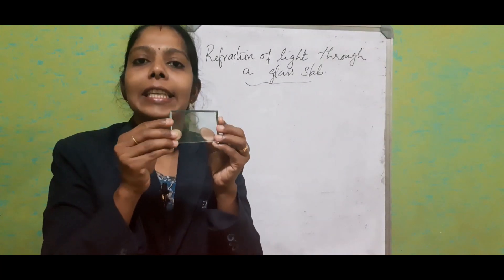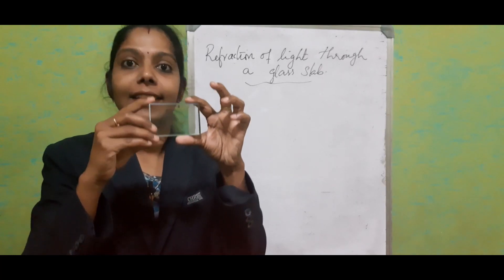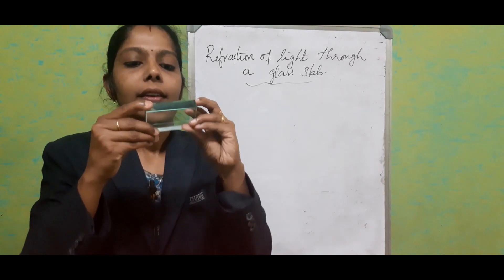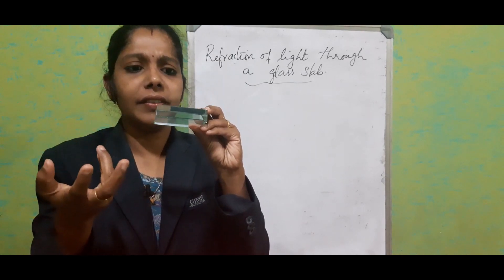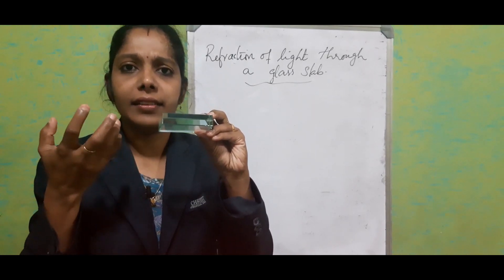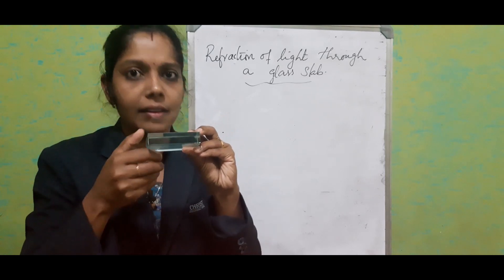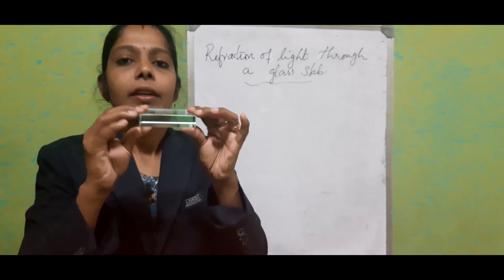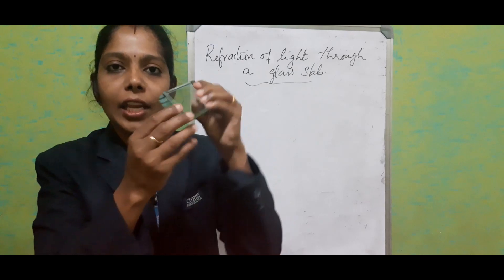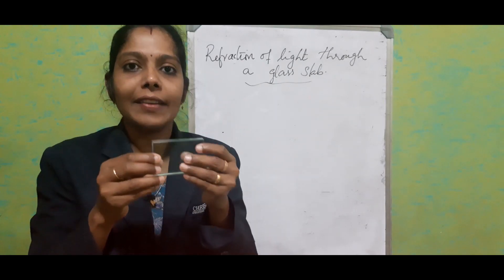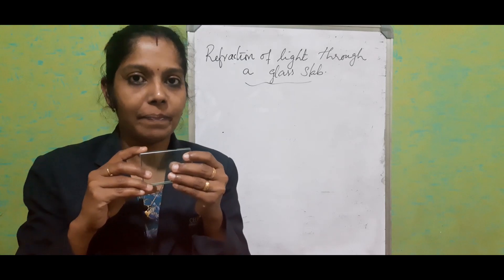Let's start with glass slab. This is a glass slab — it is rectangular in shape. It has a particular thickness, and we can get different thickness glass slabs in the market. All the sides have equal thickness.